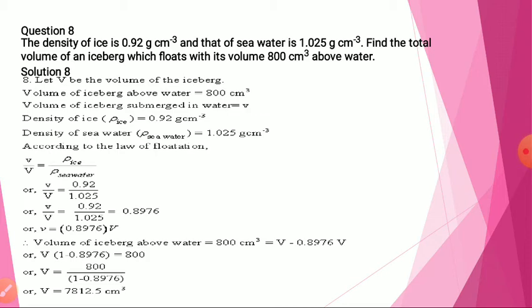The general approach here: first compare with water — the part submerged in water as small v over total volume V equals density of that body upon density of water. With this formula you can find the density of one material, and then using that density you can find another material. This is the approach used throughout all these questions.